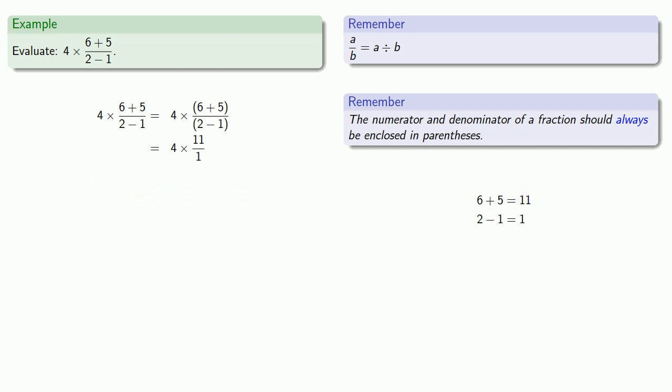And again, remember that a over b is the same as a divided by b. So we can replace 11 over 1 with 11 divided by 1. And we go left to right, which means that we should do this 4 times 11 first. So let's throw that inside a set of parentheses to remind us.